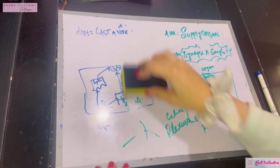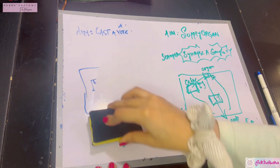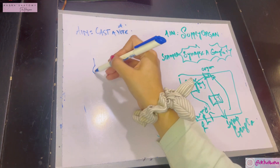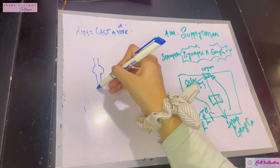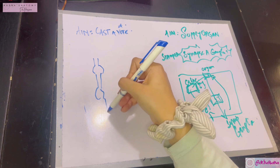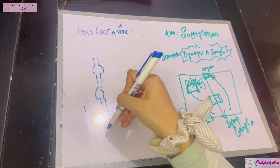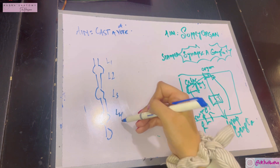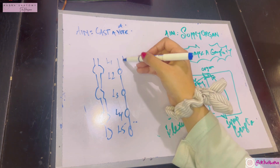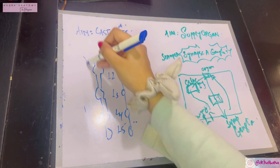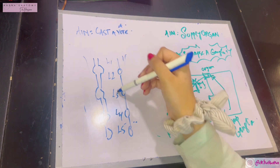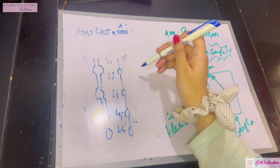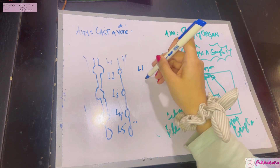Now, the lumbar sympathetic chain: this is a ganglionated chain with about four ganglia, lying on either side of the L1, L2, L3, L4, and L5 vertebrae. It lies medial to the psoas major muscle, just opposite the bodies of these L1 to L5 vertebrae.